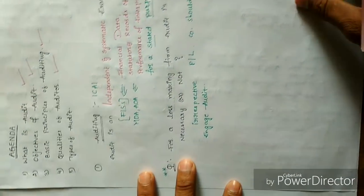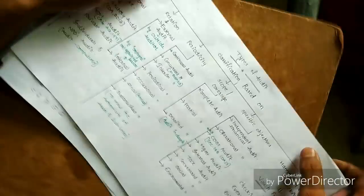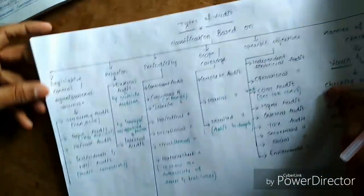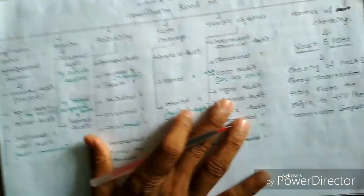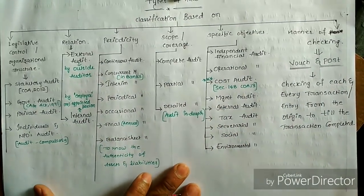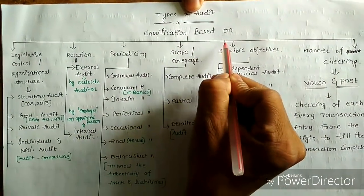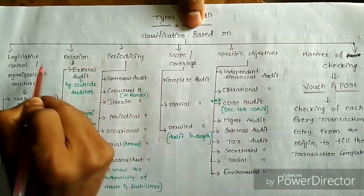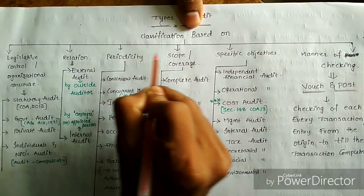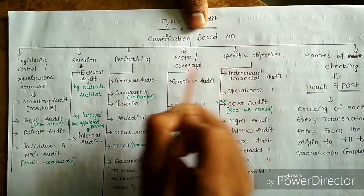I am giving a glance overview using a chart. Please take down this first. This is a classification of audit based on some basis.